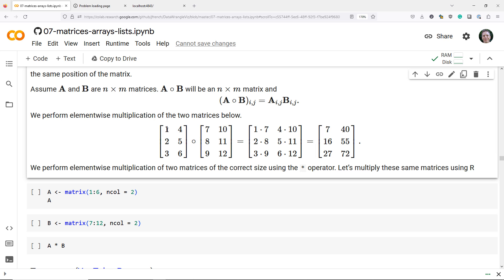So the element-wise matrix multiplication is going to be 1 times 7 in the first element, or position 1,1 of the element-wise product. 4 times 10 in position 1,2, 2 times 8 in position 2,1, 5 times 11 in position 2,2.